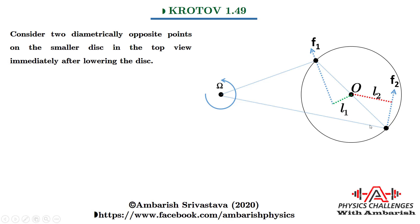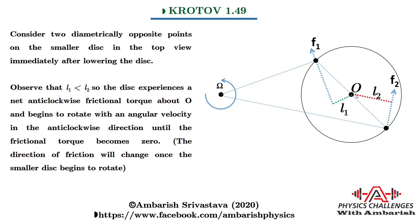Consider two diametrically opposite points on the smaller disc. At one point friction F1 acts, and at the diametrically opposite point friction F2 acts. F1 has perpendicular distance L1 from the center, and F2 has perpendicular distance L2 from the center. You can clearly see that L2 is greater than L1, so the counterclockwise torque exceeds the clockwise torque. The disc experiences a net anticlockwise frictional torque about O and begins to rotate in the anticlockwise direction until the frictional torque becomes zero.